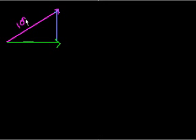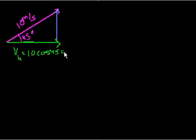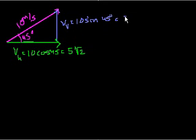So this was 10 meters per second at a 45 degree angle. We figured out in the last video that its horizontal velocity is equal to 10 cosine of 45, which equals 5 square roots of 2. And we also figured out that the vertical velocity is equal to 10 sine of 45 degrees, which also equals 5 square roots of 2. And we wanted to figure out how long does this thing stay in the air?